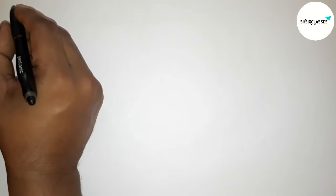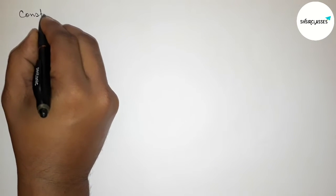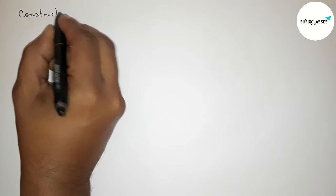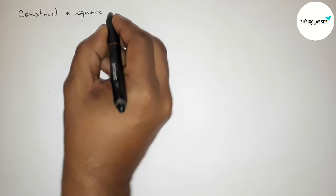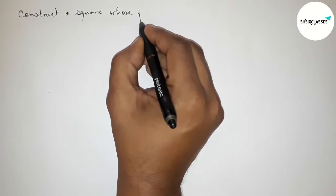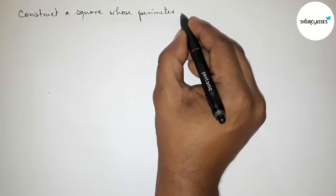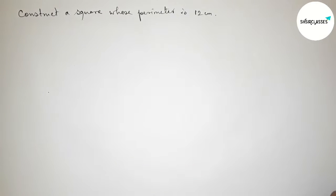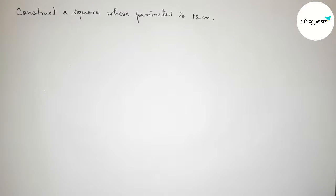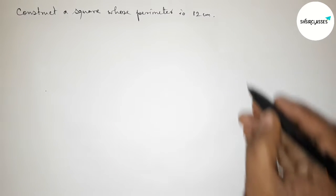Hi everyone, welcome to SI Share Classes. Today in this video we have to construct a square whose perimeter equals 12 centimeters. Please watch the video till the end. Let's start.